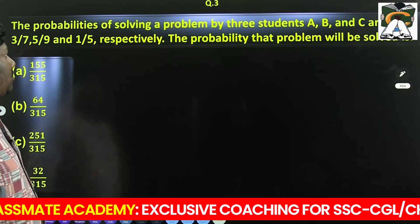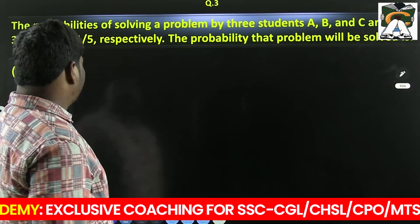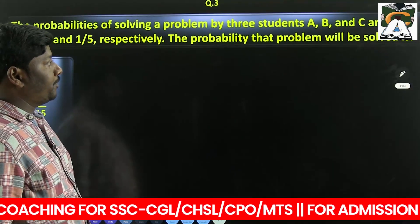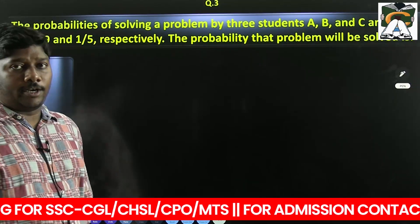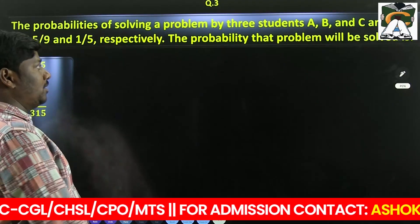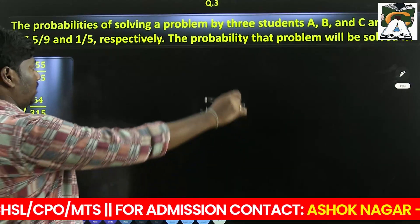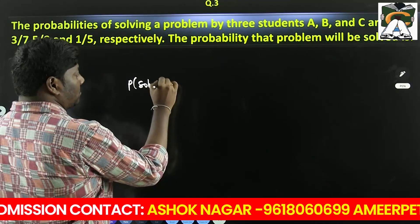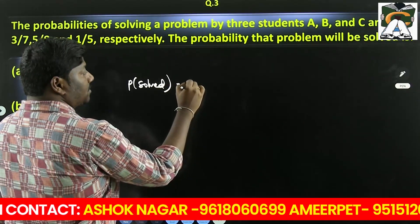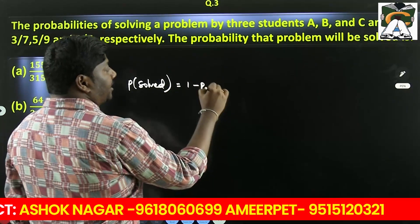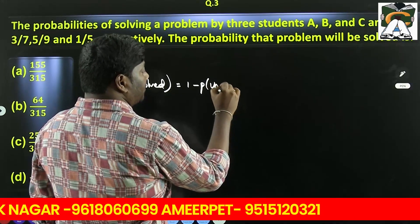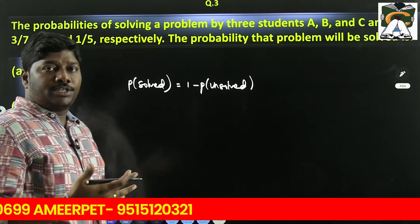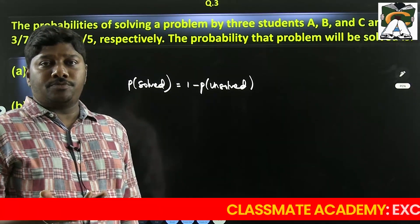The probabilities of solving a problem by 3 students A, B, C are 3 by 7, 5 by 9, 1 by 5 respectively. The probability that the problem will be solved. Problem will be solved means A can solve, B can solve, C can solve. Many cases. So better than that, 1 minus probability of none.